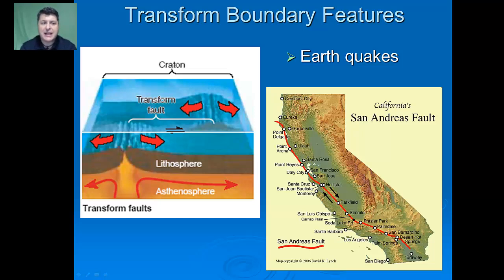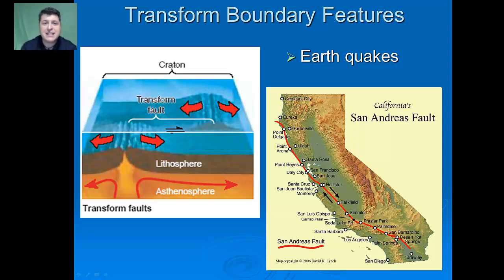The first type is called a transform fault, or slip fault. At these boundaries, the two plates are actually sliding next to each other. As they slide, sometimes they release intense energy if they get caught up on each other, resulting in earthquakes. One of the biggest transform faults is found in California — the San Andreas fault.